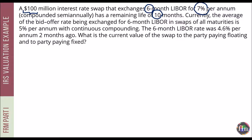Currently, the average of the bid-offer rate being exchanged for six-month LIBOR in swaps of all maturities is 5% per annum, given as continuously compounded. The six-month LIBOR rate was 4.6% per annum two months ago, meaning on the last fixing date. The question asks for the current value of the swap to the party paying floating and to the party paying fixed.